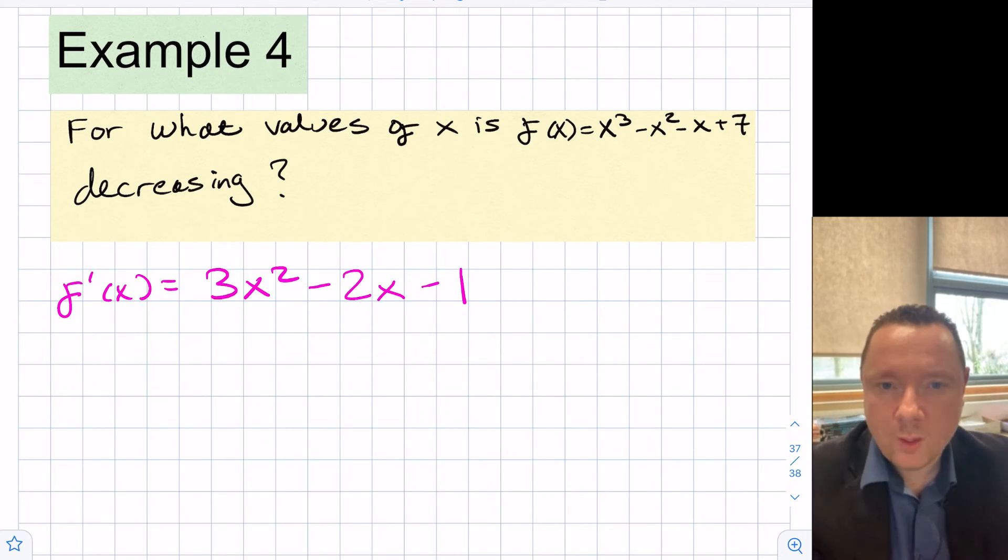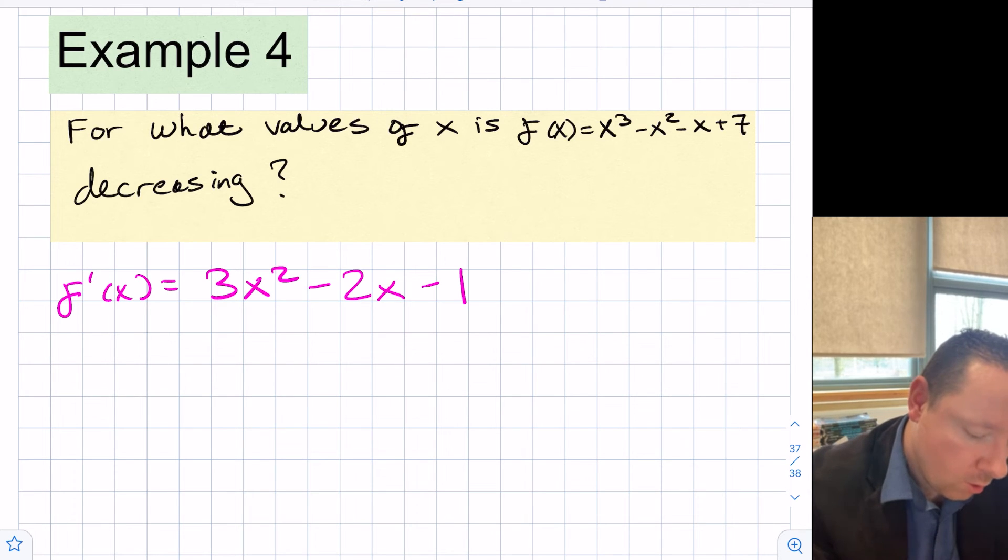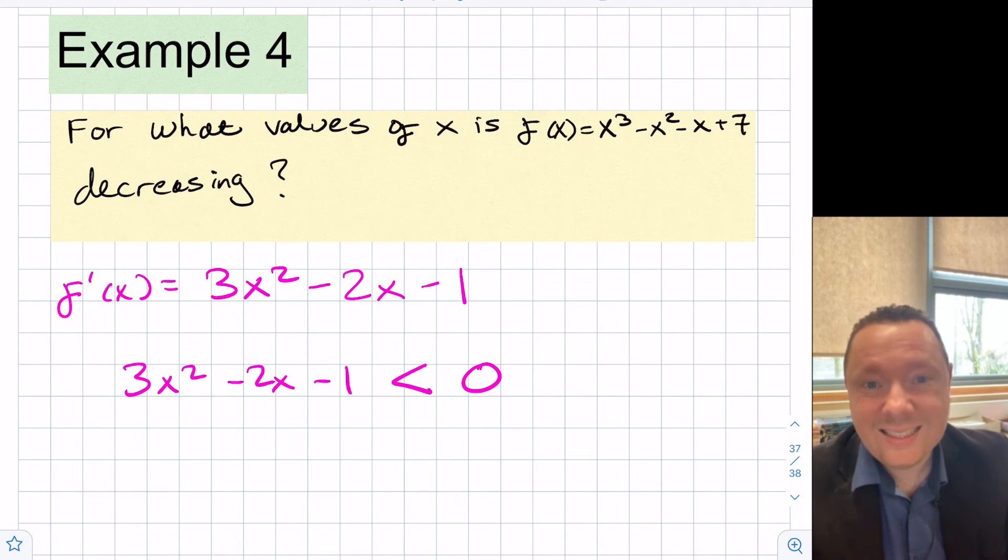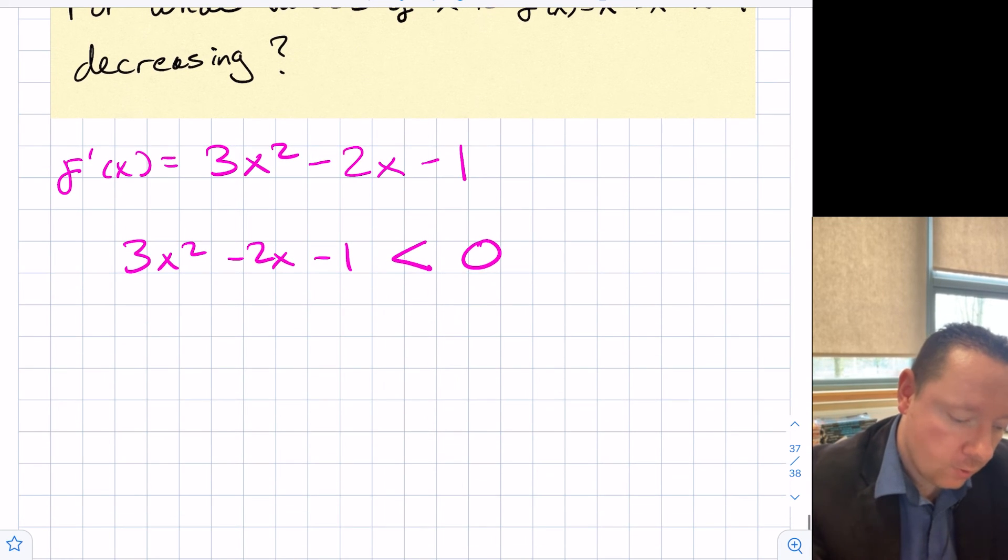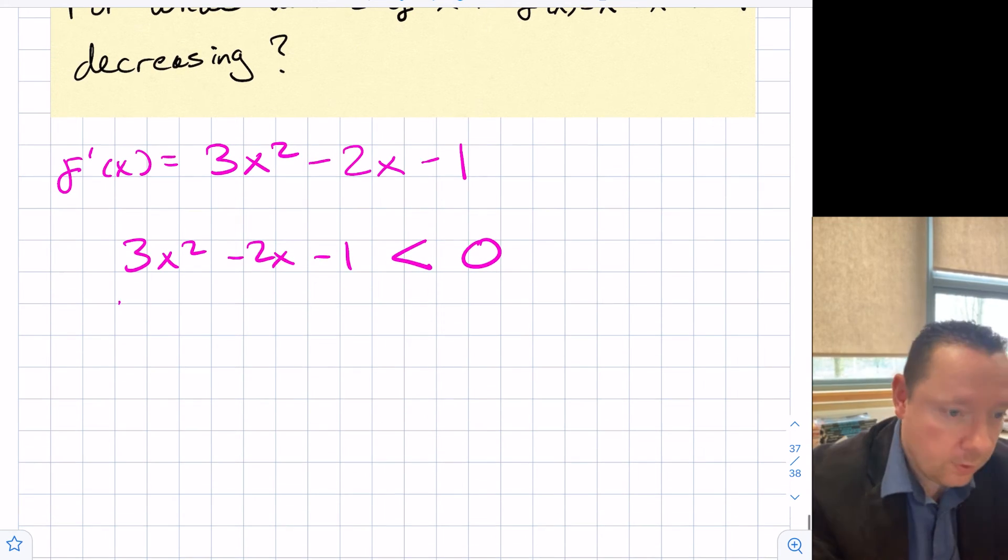We want to know when's that decreasing, so we want to know when is 3x squared minus 2x minus 1 less than zero. We've got a quadratic inequality to solve. Let's see if we can factorize it. We get 3x plus 1 and x minus 1.